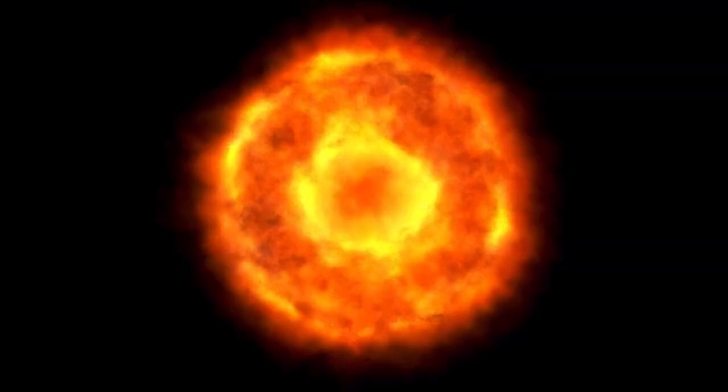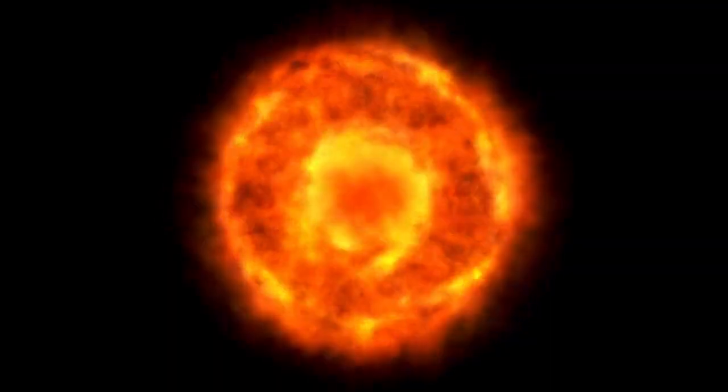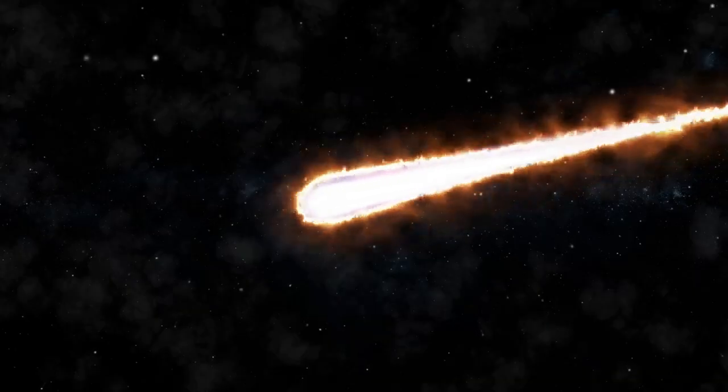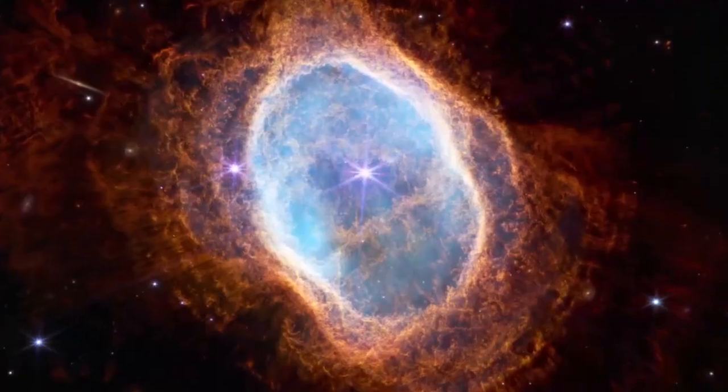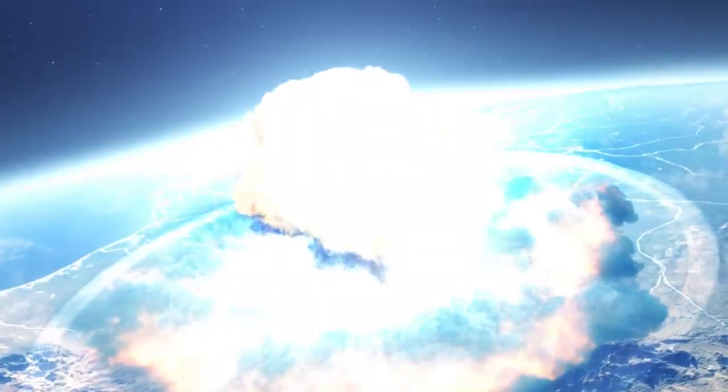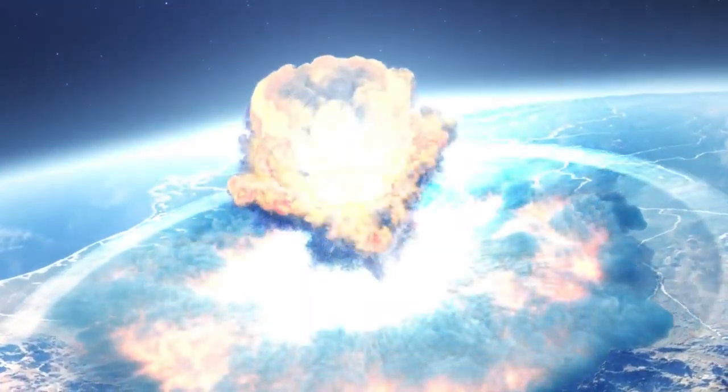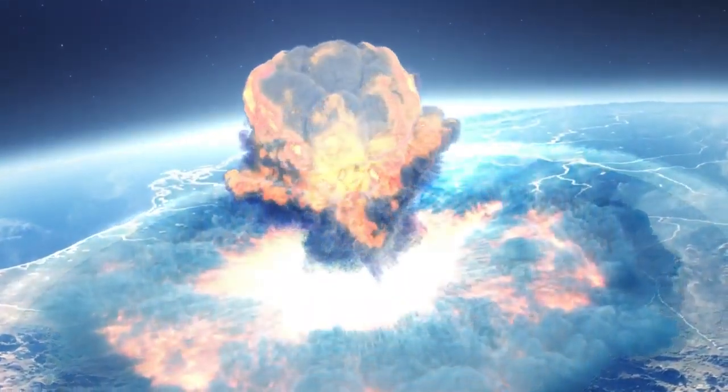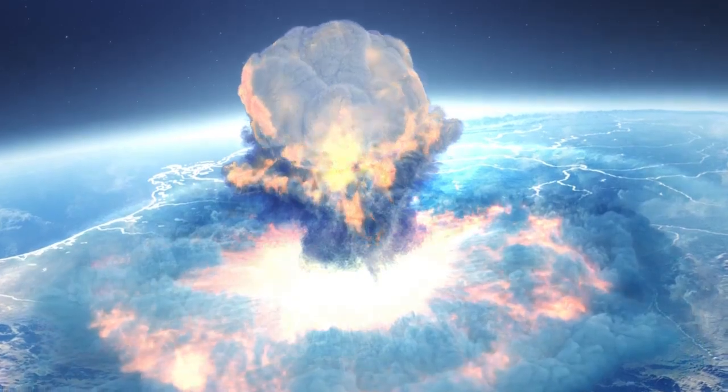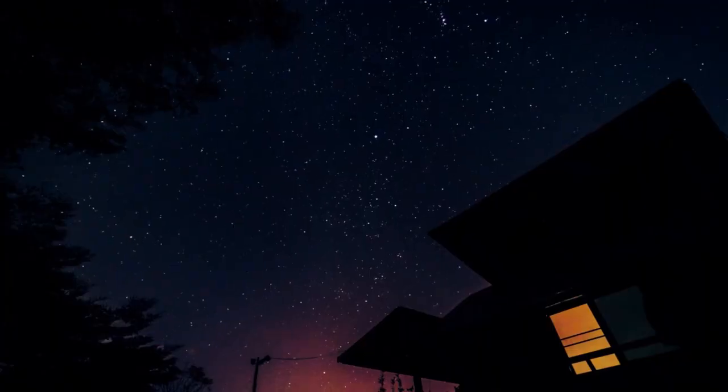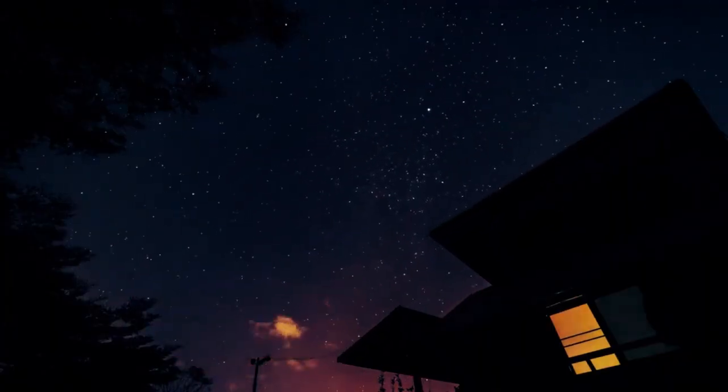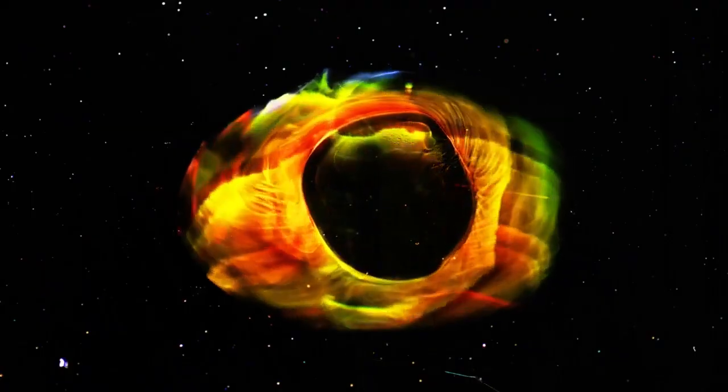Betelgeuse, also known as Alpha Orionis, is one of the largest and brightest stars in the night sky. Located about 724 light-years away from Earth, it is part of the constellation Orion, easily recognizable by its position near the belt of three stars. This red supergiant is approximately 100,000 times more luminous than our Sun, and though it may seem a distant and harmless giant, its size and proximity to Earth make it one of the most studied stars in the sky.